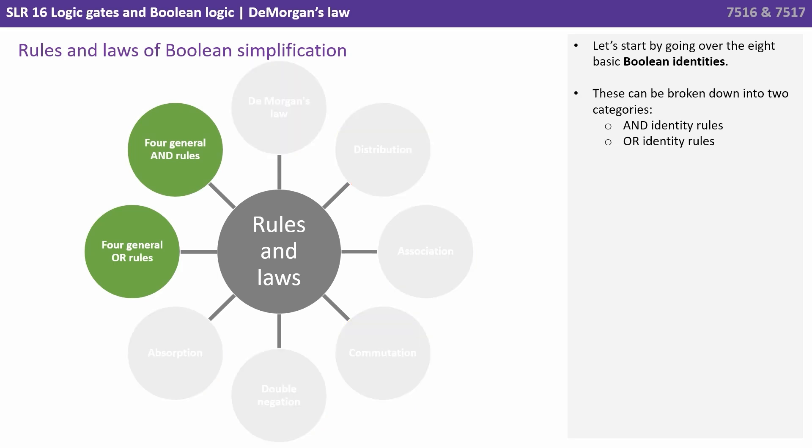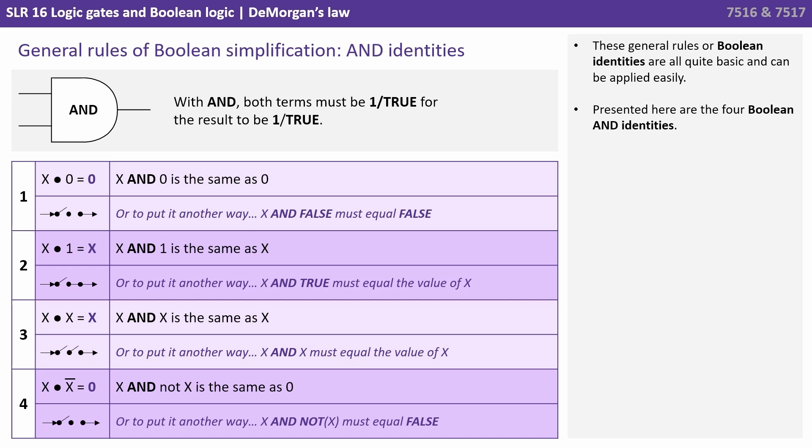Let's start by going over the eight basic Boolean identities. They can be broken down into two categories, the AND identity rules and the OR identity rules. These general rules or Boolean identities are all quite basic and can be applied easily. Presented here are the four Boolean AND identities. Remember, with an AND gate, both inputs must be true or one for the result to be true.